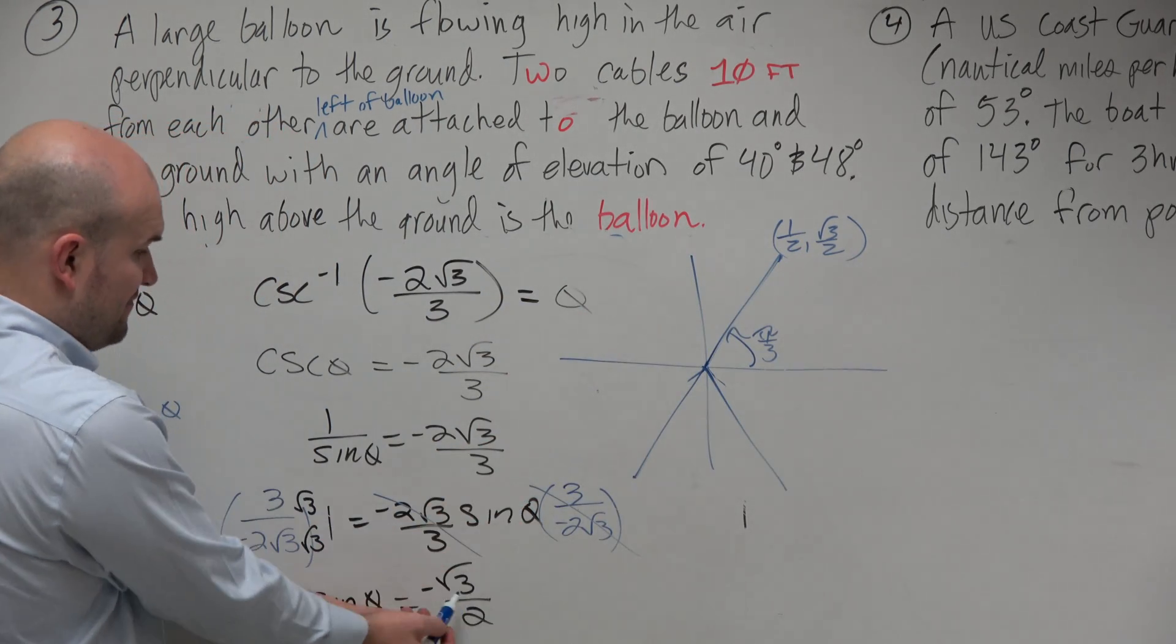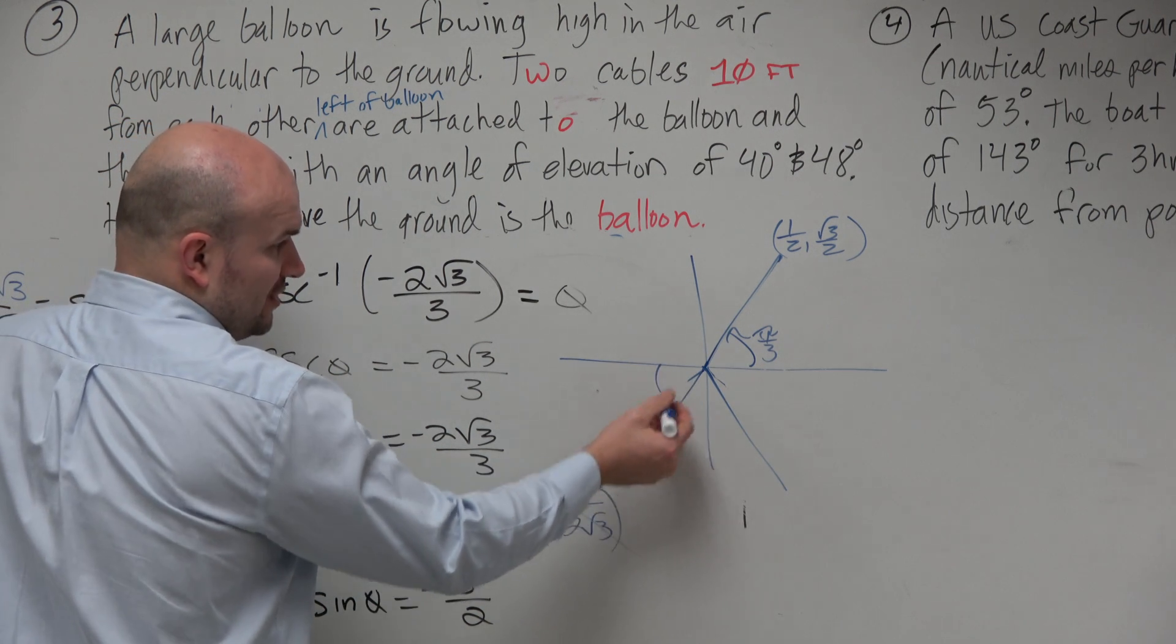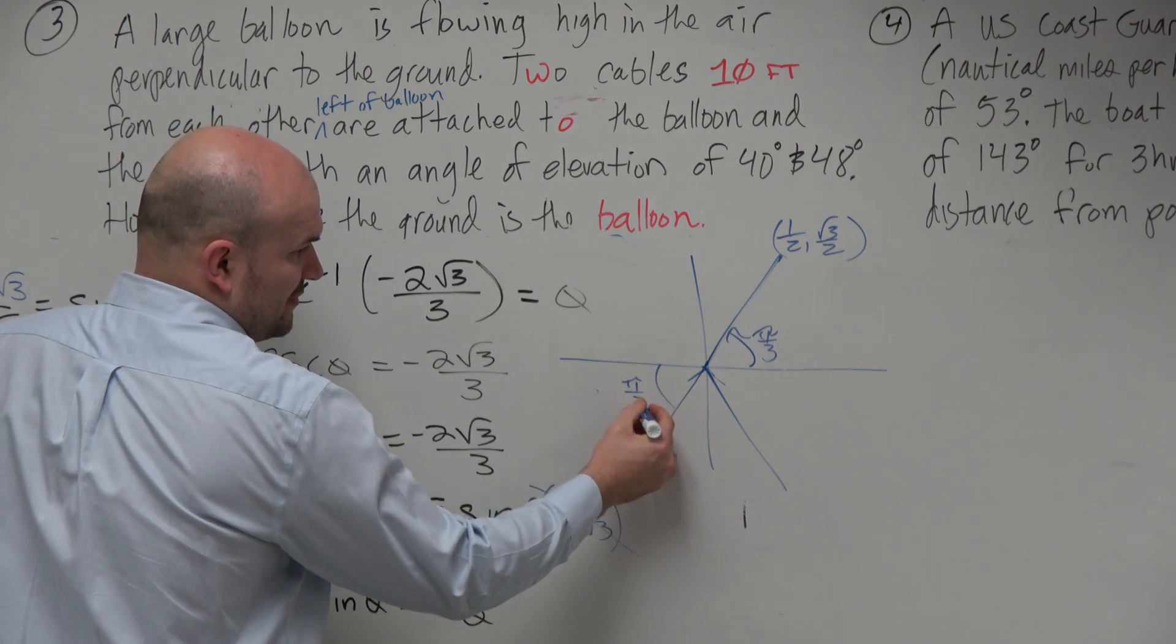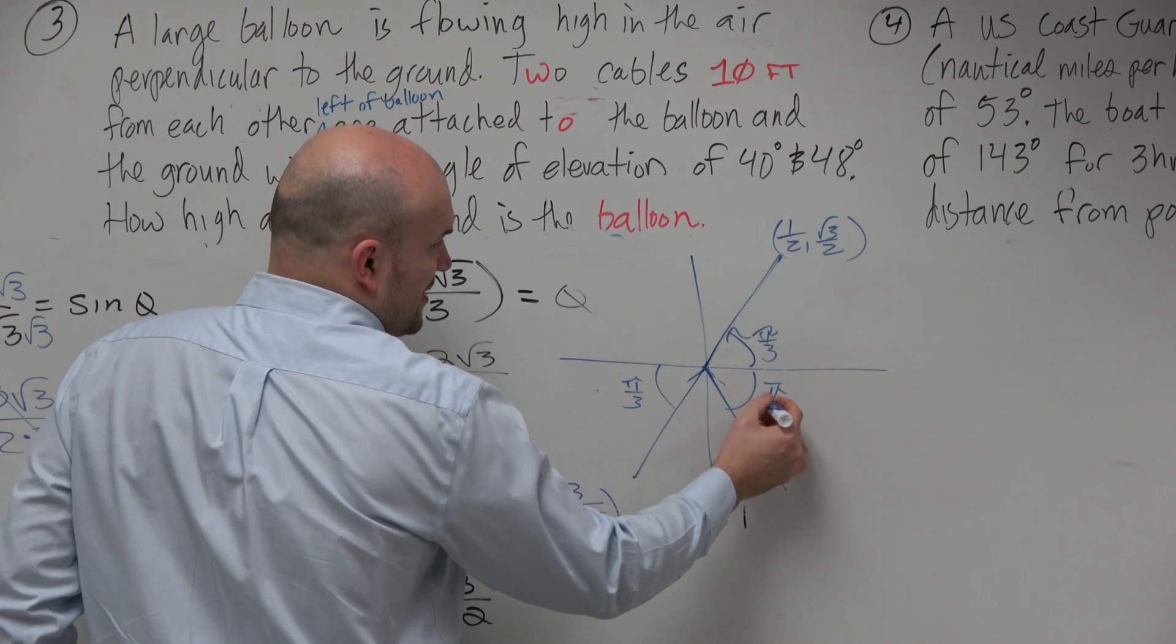But guess what? We don't have positive. We have negative. So it has to be this angle, which has the same reference angle of pi over 3, or this angle, which has the same reference angle of pi over 3.